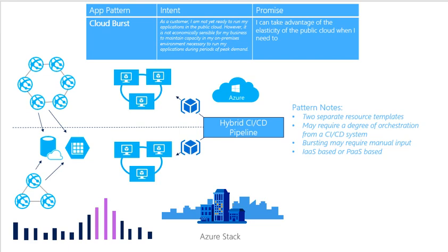In this scenario we will be using a CI/CD pipeline to do the deployment, scale up, and scale down. If you see that pattern, it's basically two separate resource templates that may require a degree of orchestration from the CI/CD perspective, along with other infrastructure hosted or PaaS services.